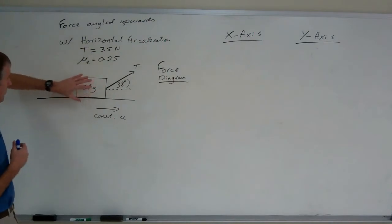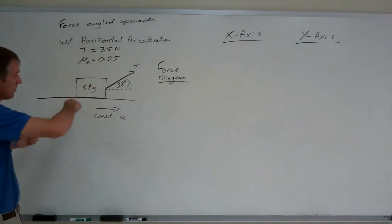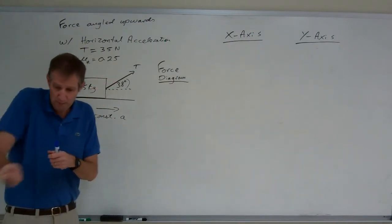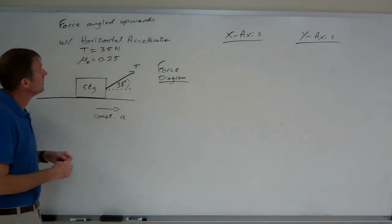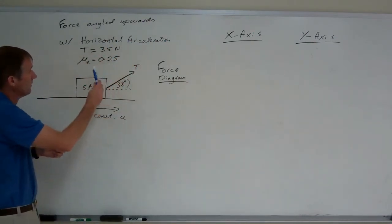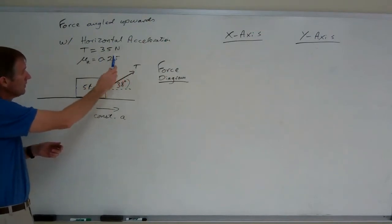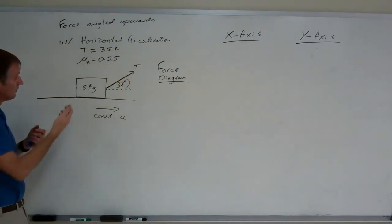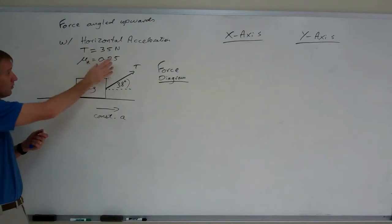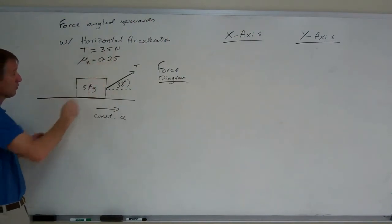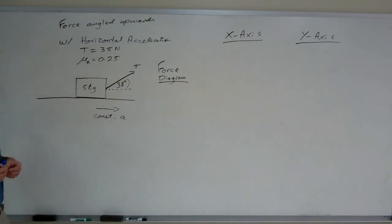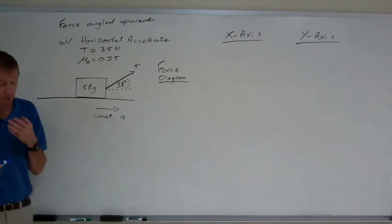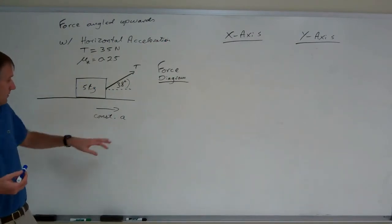Let's assume we have a block of some sort with a string. You're pulling up on the string or the rope as it slides horizontally and it's accelerating. The tension in the rope or string is 35 newtons. There is friction present with a coefficient of kinetic friction of 0.25 and the object has a mass of 5 kilograms. So the first thing is to draw the force diagram and again the purpose will be to find the acceleration.